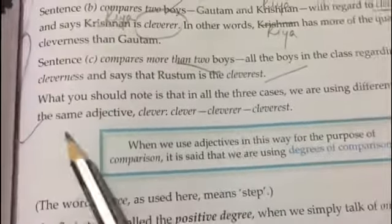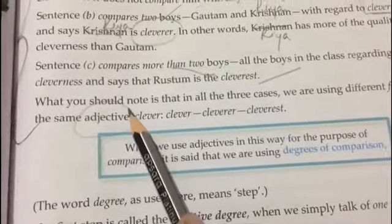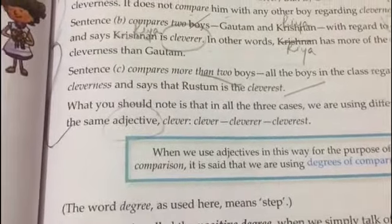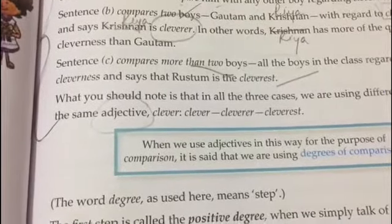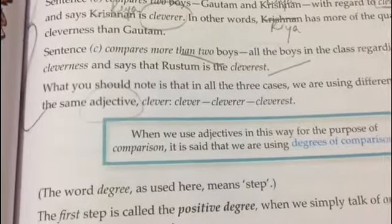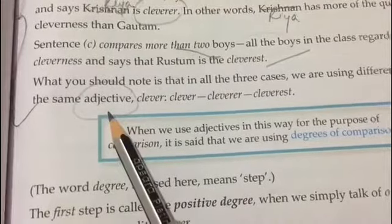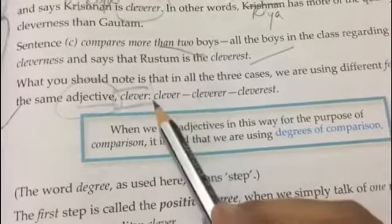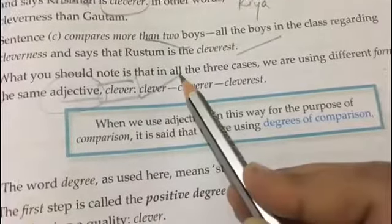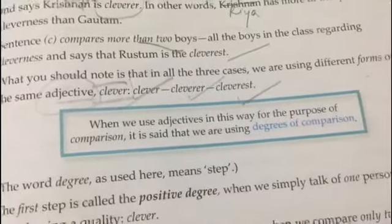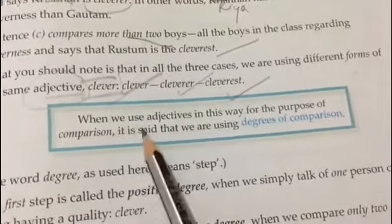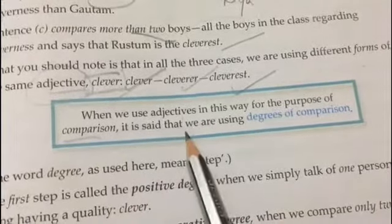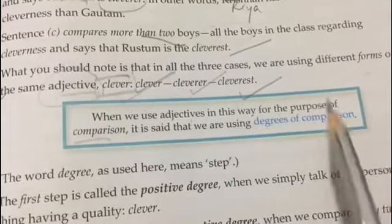What you should notice is that in all three cases, different forms of the same adjective are used. An adjective describes the quality or quantity of a noun or pronoun. Here, the different forms of the adjective 'clever' are used: clever, cleverer, and cleverest. When adjectives are used in this way for comparison, it is called the degree of comparison.